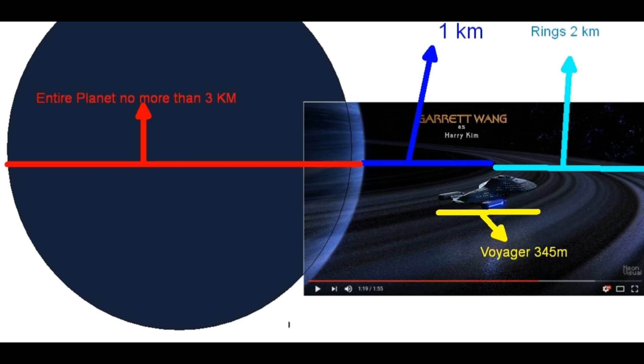Well, if you take the red line and compare it to the dark blue line, you can calculate that the red line is about 3 times as long as the dark blue line. Which means that the planet is 3 kilometers in size.